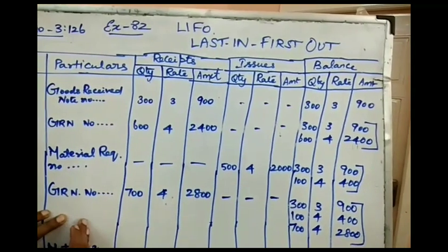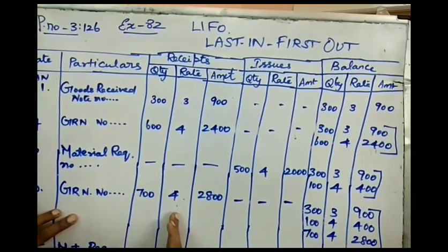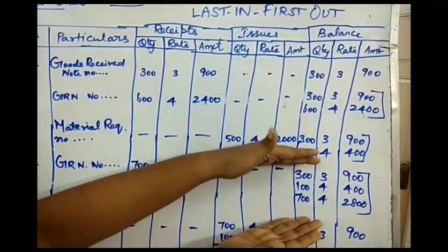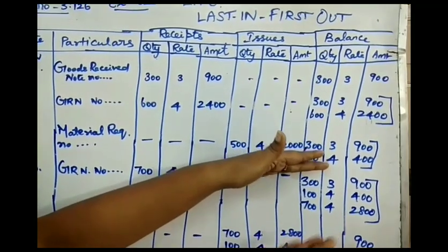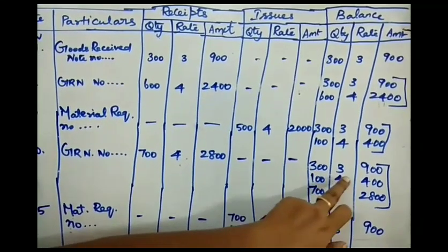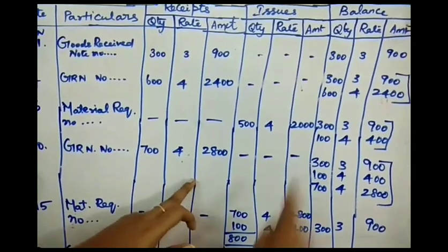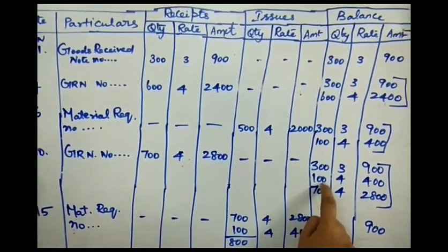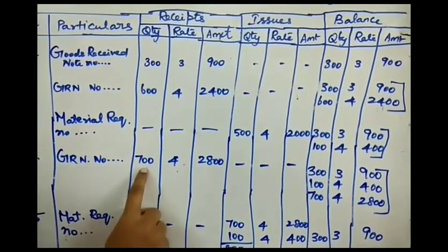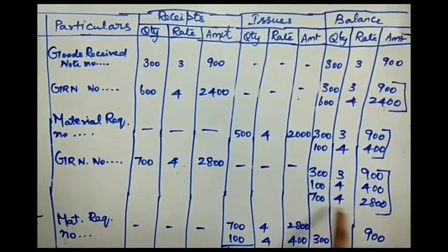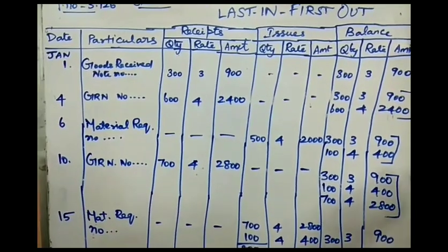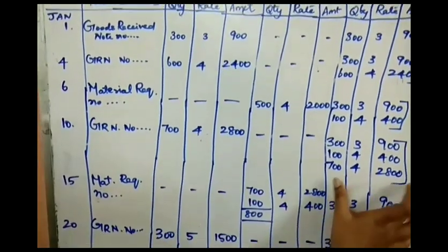On January 10th, a new purchase is made: 700 units at ₹4 per unit, total value ₹2800, recorded under Goods Received Note. Balance records are maintained separately — the first lot: 300 units at ₹3 = ₹900; the second lot balance: 100 units at ₹4 = ₹400; and the new purchase: 700 units at ₹4 = ₹2800, all kept distinct.